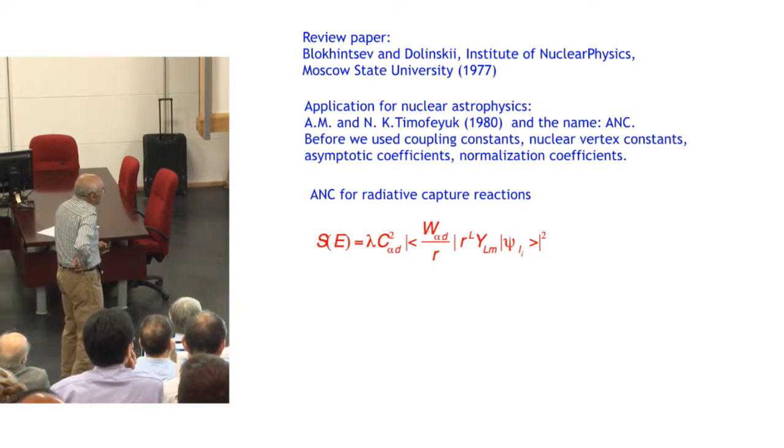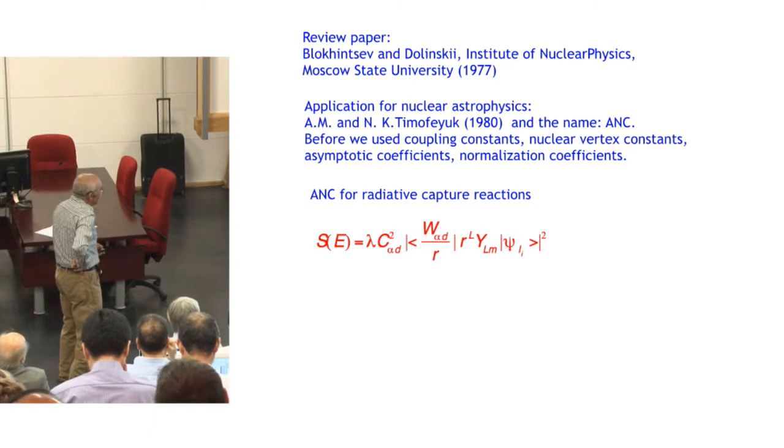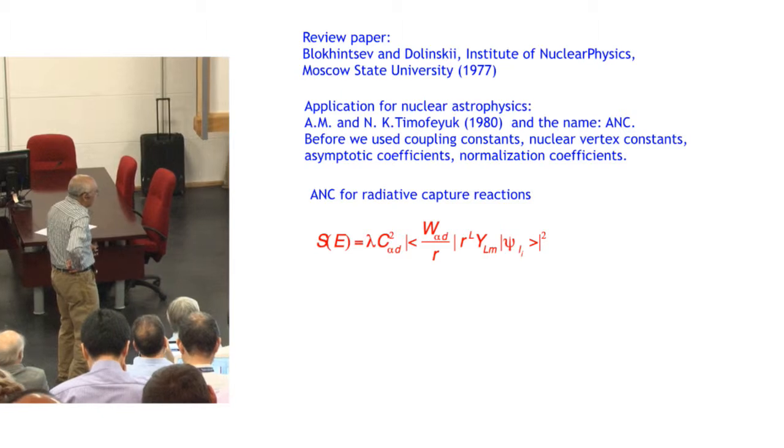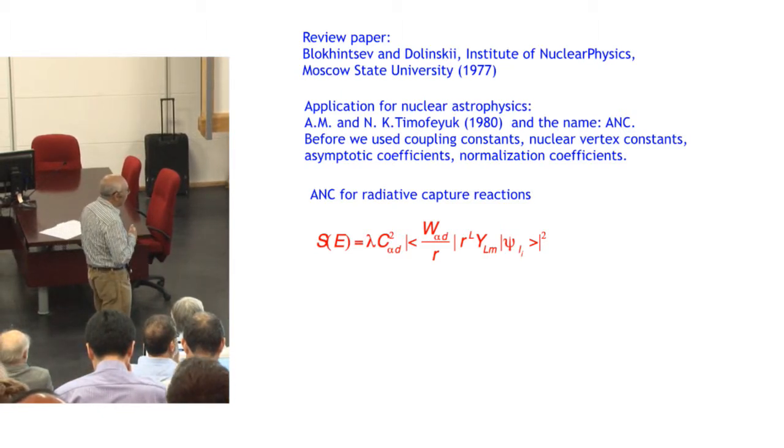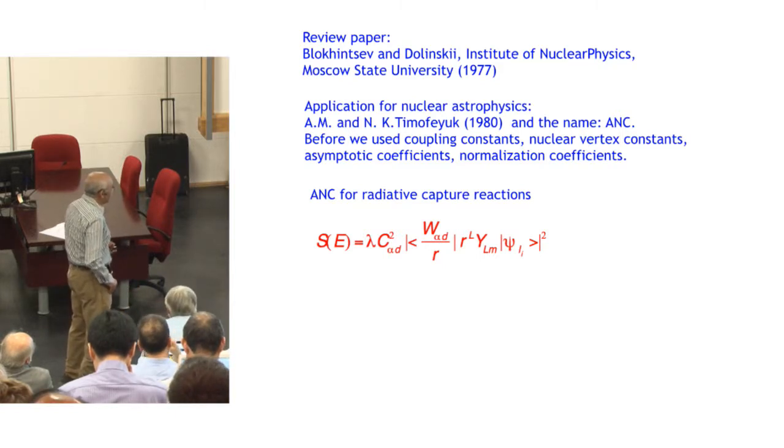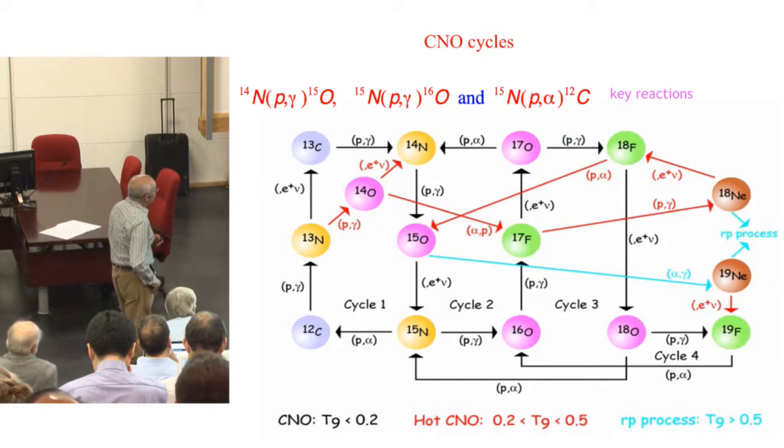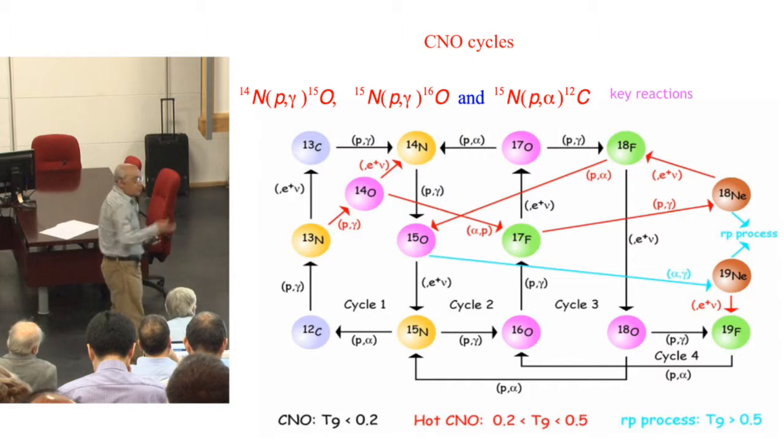ANC can be used for radiative capture reactions. If we have a radiative capture reaction, this is the initial scattering wave function, this is the electromagnetic transition operator, and here should be an overlap function. If, due to the Coulomb barrier, the reaction is peripheral and pushed out, and the electromagnetic transition operator contains R^L where R is the distance between interacting particles, then it pushes the matrix element integral to the external region. We can replace the overlap function with its asymptotic form. So ANC comes out as an overall normalization of the astrophysical factor, and that is what's used in the ANC method.